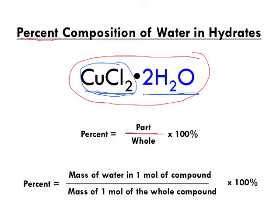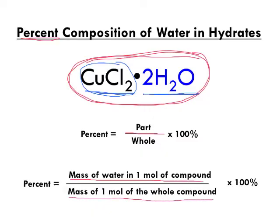We want to work out what percentage of the mass of this overall formula is water. The way you do that is: find the mass of water in one mole of the compound, divide that by the overall mass of one mole of the compound, and multiply by 100.